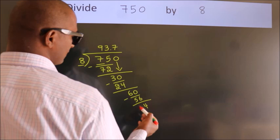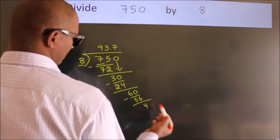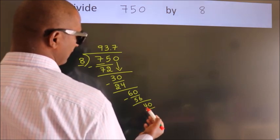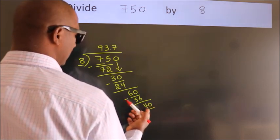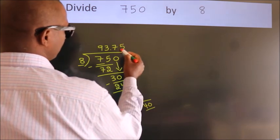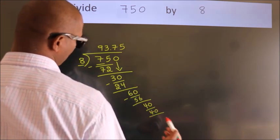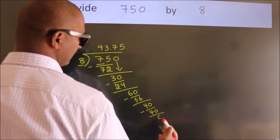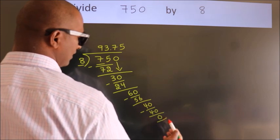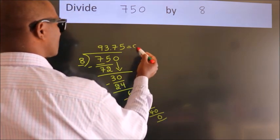After this, we already have the decimal, so directly take 0, making 40. When do we get 40 in the 8 table? 8 fives is 40. Now we subtract and get 0. Here we got remainder 0, so this is our quotient.